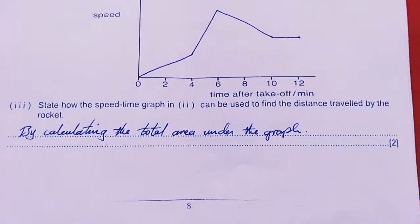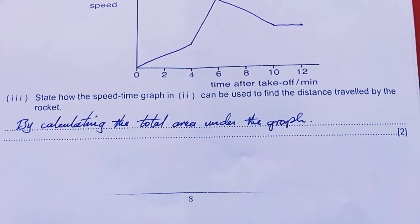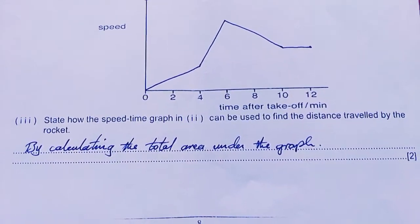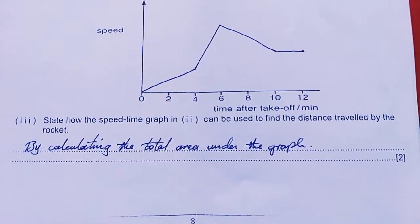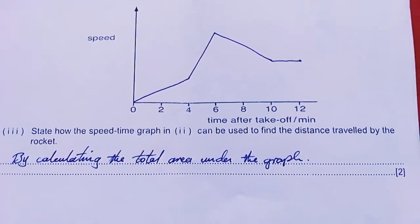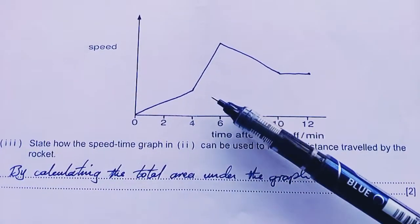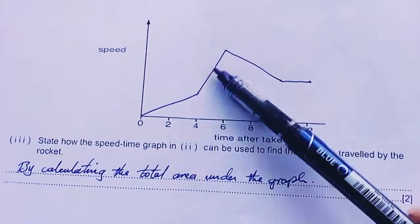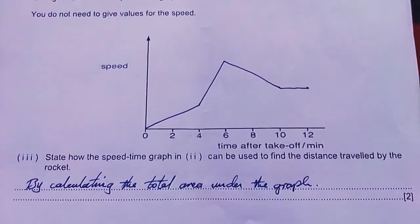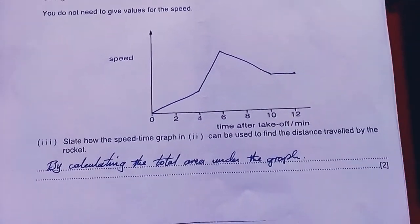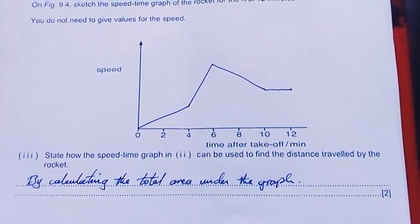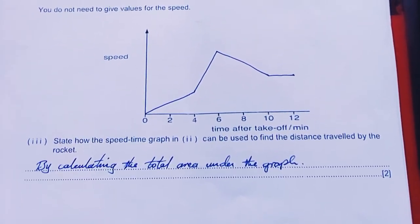State how the speed time graph can be used to find the distance traveled by the rocket: by calculating the total area under the graph. The area represents distance, the gradient represents acceleration. This paper was nice. I hope you enjoyed it. Remember to subscribe and share this with friends as we keep on revising towards the exam. I'll call it a day. Bye-bye for now.